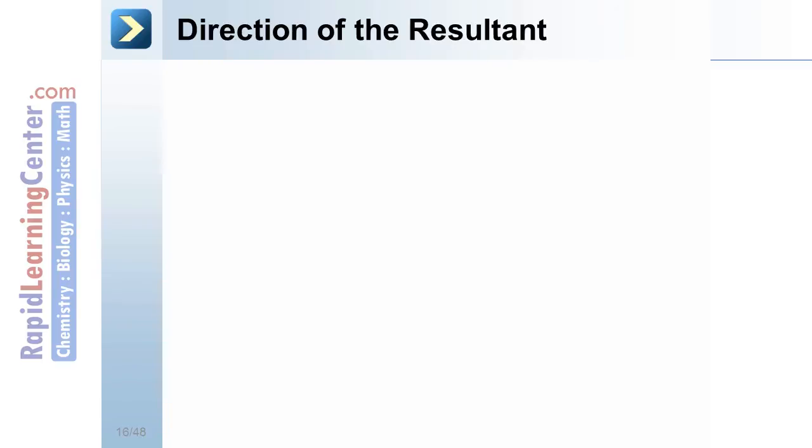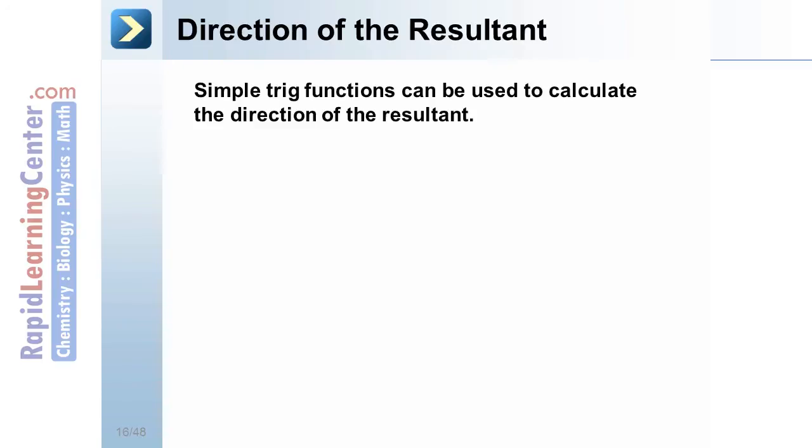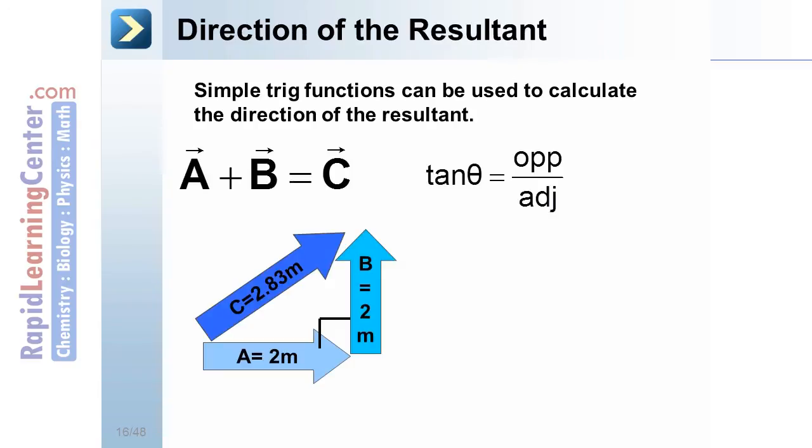Direction of the resultant. Simple trig functions can be used to calculate the direction of the resultant. In our example, use the tangent function. Take the opposite side, b, and the adjacent side, a, and find the tangent of the angle, theta. Take the inverse tangent of that value, 1, and you find the angle, 45 degrees.